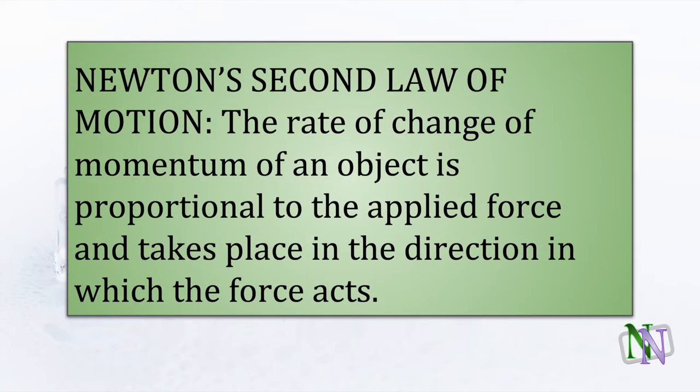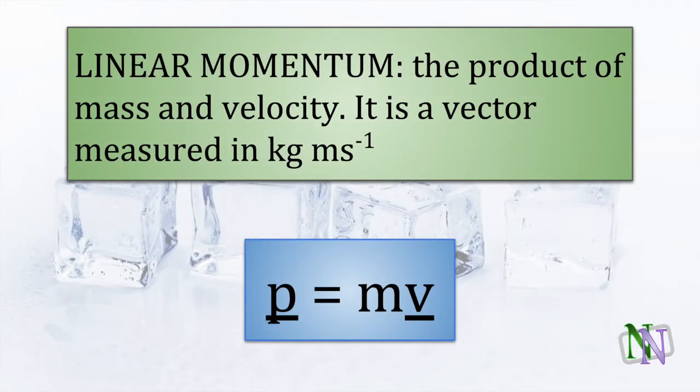Before we can use the Second Law of Motion, we must first understand the concept of rate of change of momentum. So we start with the idea of momentum. When you multiply the mass and velocity of an object together, the resulting quantity is called momentum.